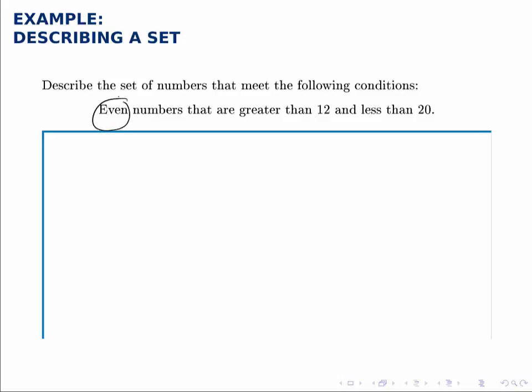First of all, they're even, then they're greater than 12, and they're less than 20. Each of these conditions has to be true, so it's even AND greater than 12 AND less than 20.